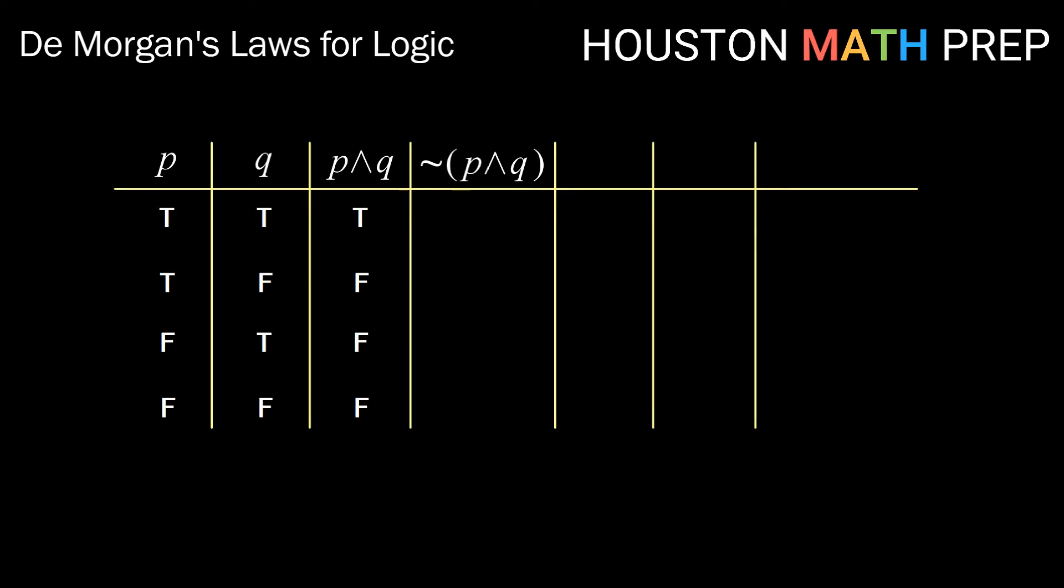Next, we can create not P and Q by recognizing that the negation should be the opposite of the statement. So the opposite of true, false, false, false is false, true, true, true.